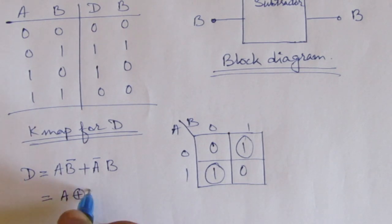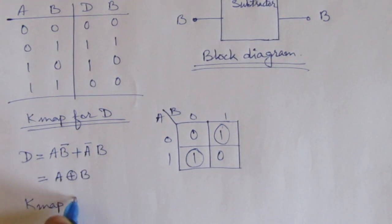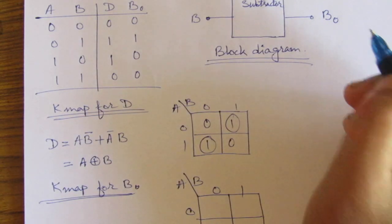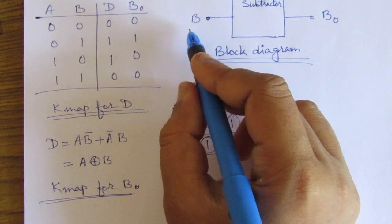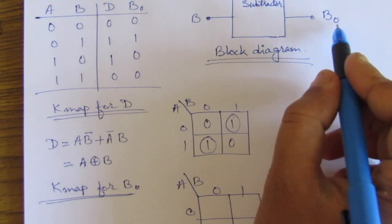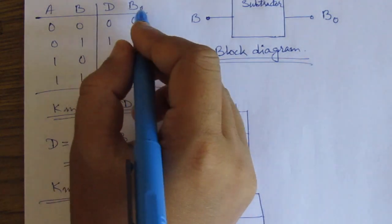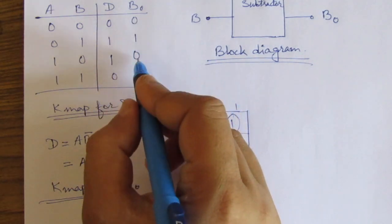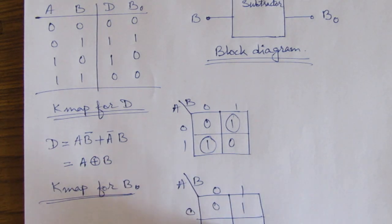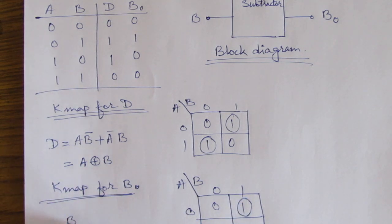Now the K-map for Borrow. We are representing the borrow output as B₀ because we have already taken B as input B. From the K-map we can see the values: 0, 0, 1, 0. So only one term exists, and we get B₀ equal to Ā·B.